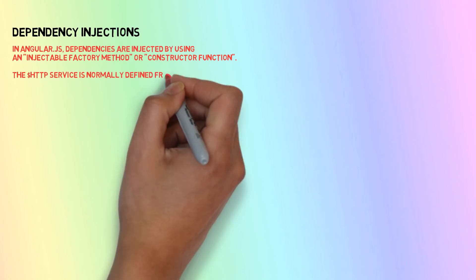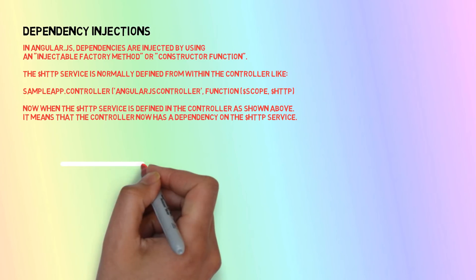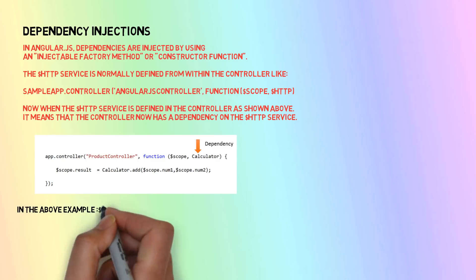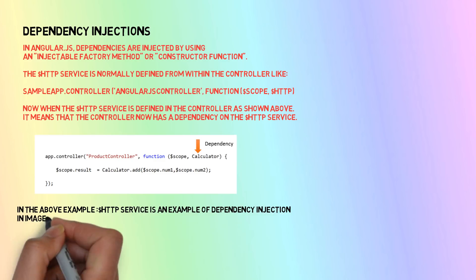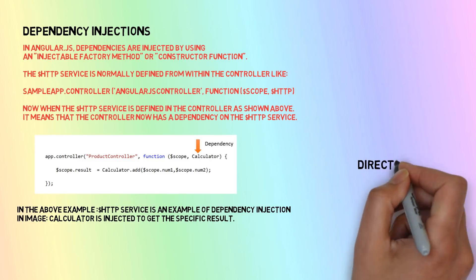The next topic is dependency injection, which is an important and big concept in AngularJS. To give a brief summary: in AngularJS, dependencies are injected into the controller, or anywhere else, so that we can use their features. In simple terms, if we want to get data from a controller or post anything, we need an HTTP service. We inject that HTTP service into the controller and use it to post and get data. That is the main concept of dependency injection.